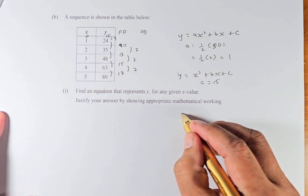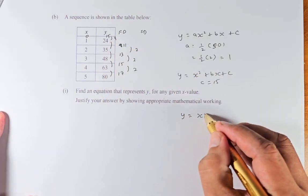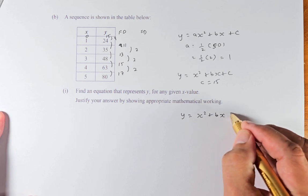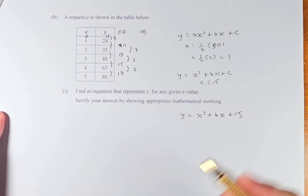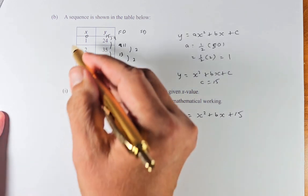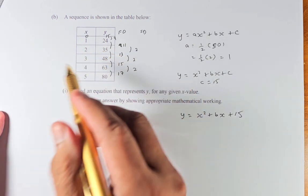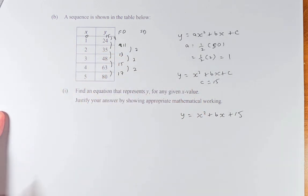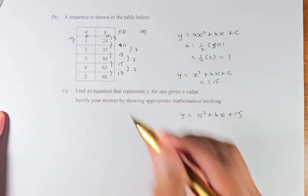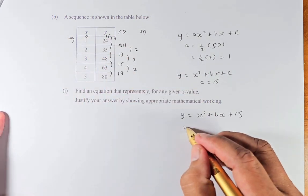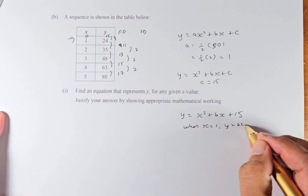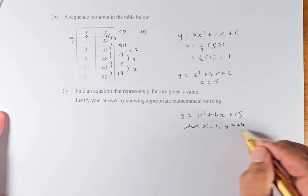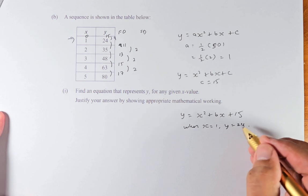The equation now becomes y equals x squared plus bx plus 15. We need to find the value of b. To find b, we can use any pair: 1 and 24, 2 and 35, 3 and 48, 4 and 63, or 5 and 80. But the easiest is 1 and 24. When x equals 1, y equals 24.